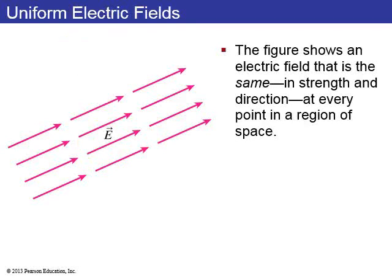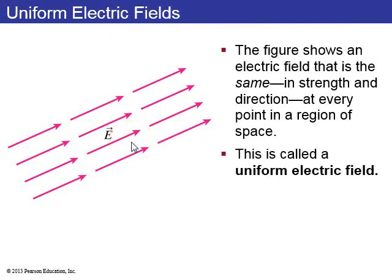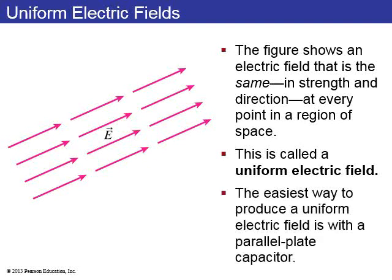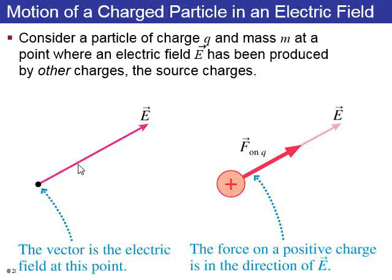A uniform electric field has the same magnitude and direction at every point in space. The easiest way to produce a uniform electric field is to use a parallel plate capacitor — inside the capacitor you have a uniform electric field.